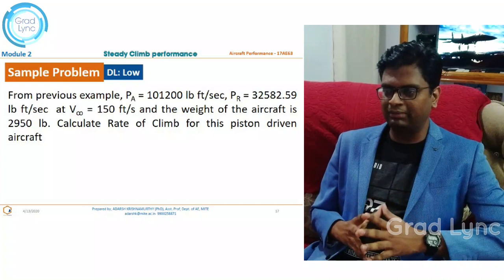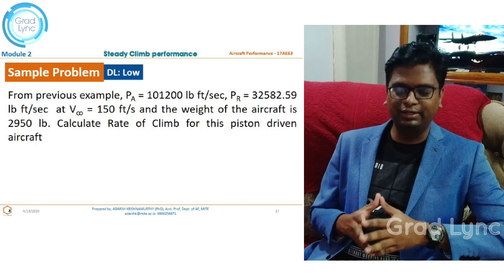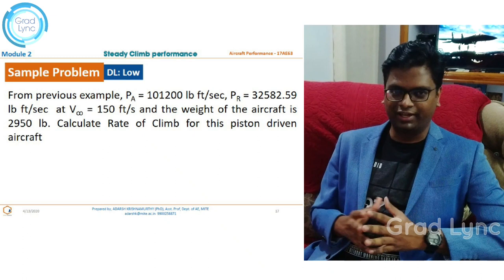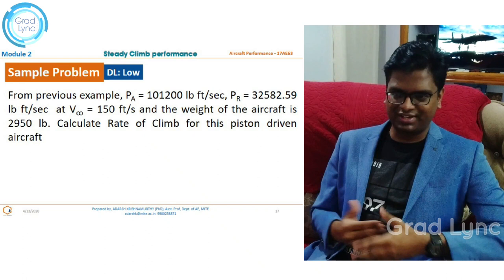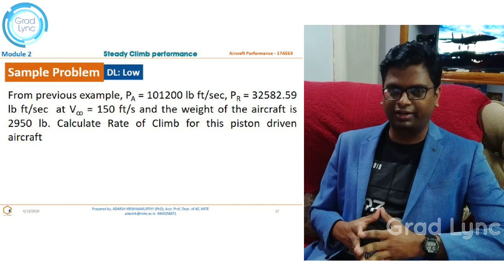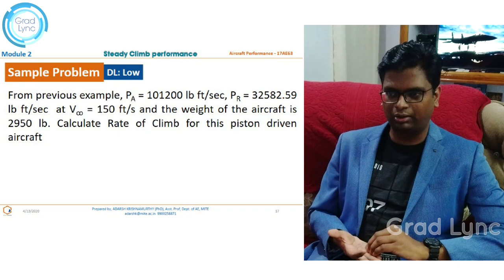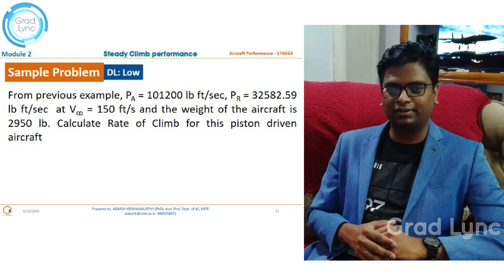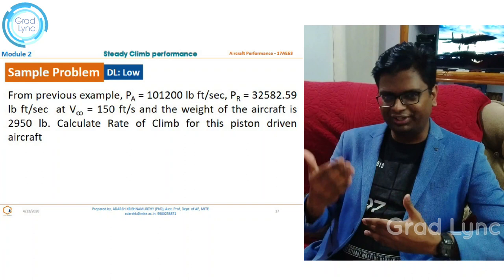The power available and power required values are given at a velocity of 150 feet per second, and the weight of the aircraft is 2950 pounds. We have to calculate the rate of climb for this piston-driven aircraft. It is a very straightforward problem, and these values of power available and power required were obtained from the previous example.